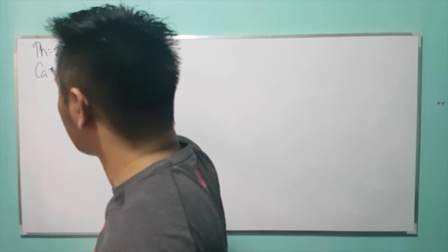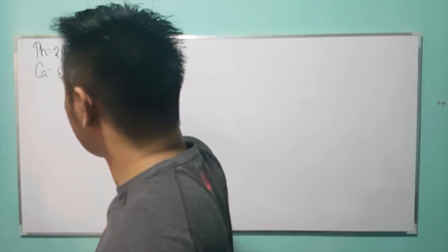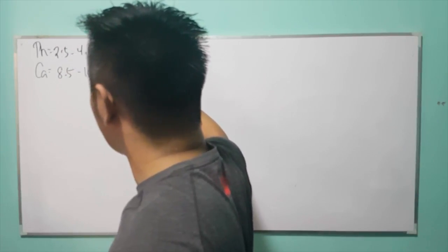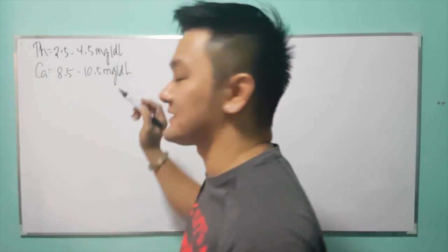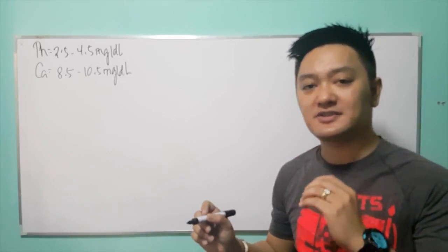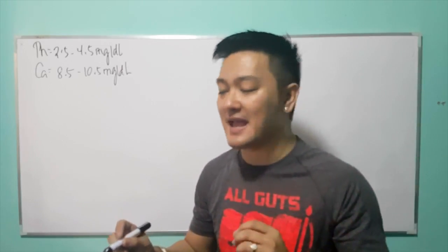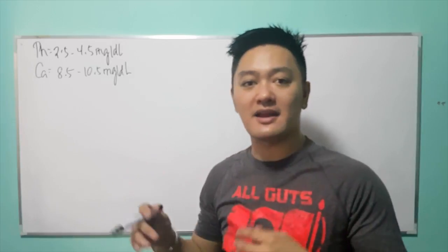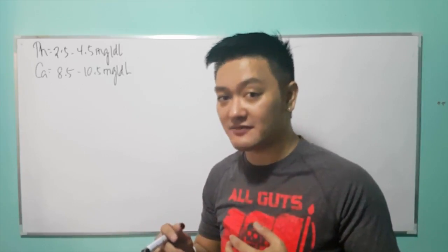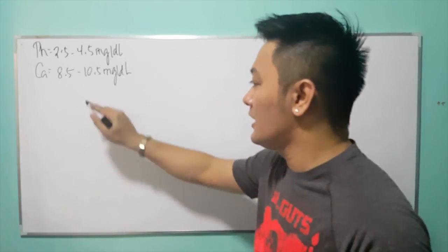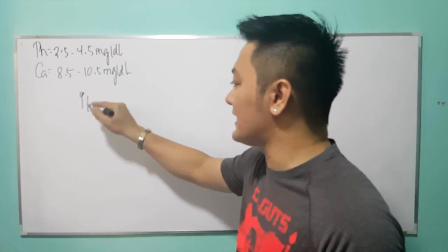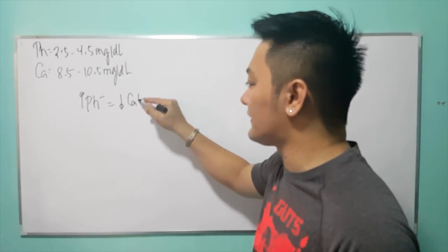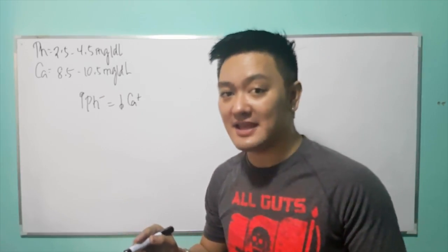The normal calcium level is 8.5 to 10.5 milligrams per deciliter. The thing to remember in your exam: phosphate and calcium are inversely proportional. Do not forget that. If there is an increase in your phosphate, calcium level decreases.